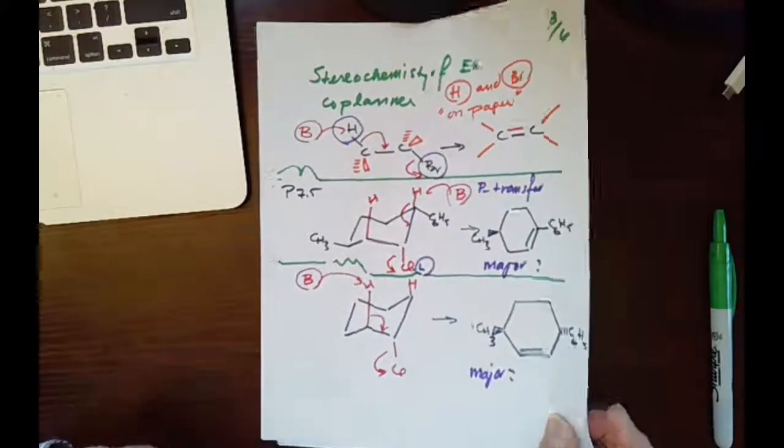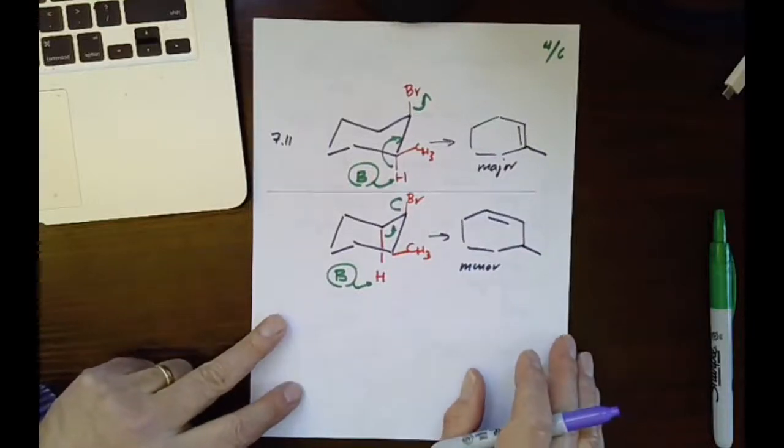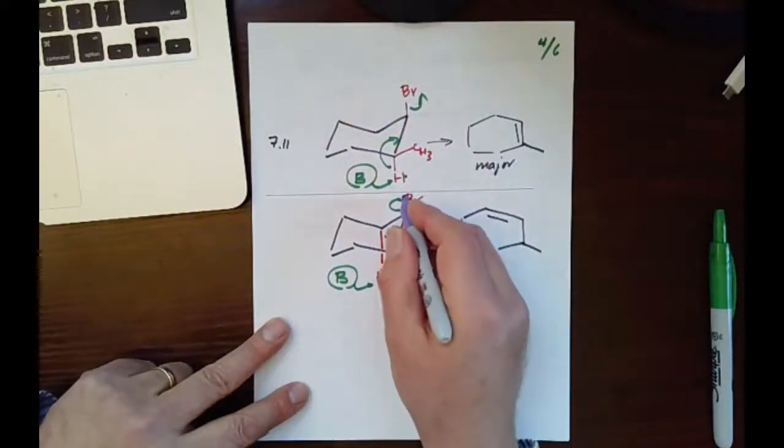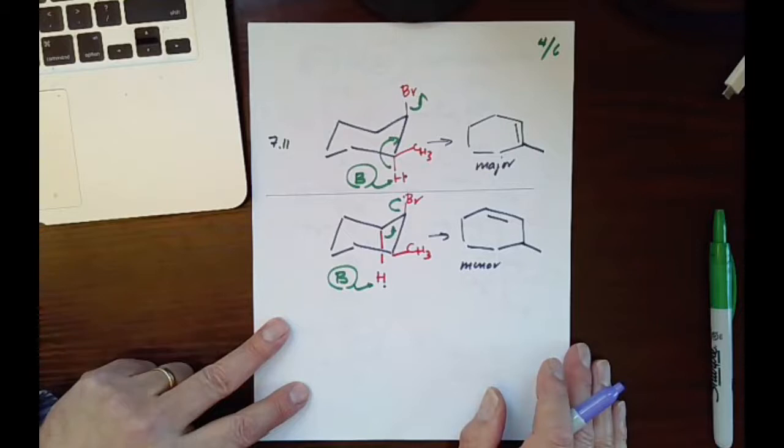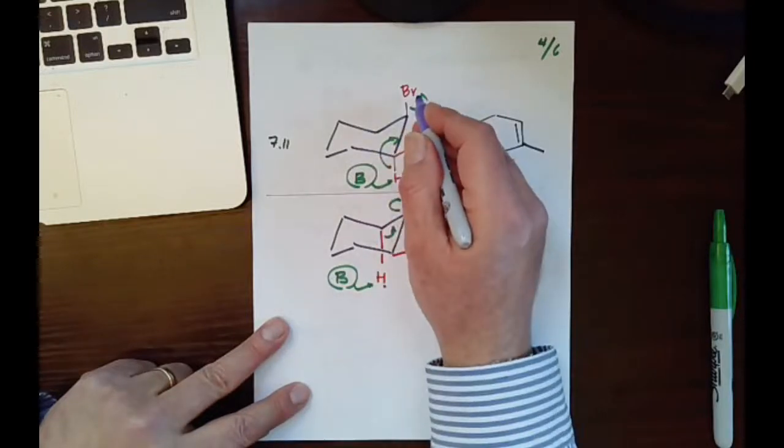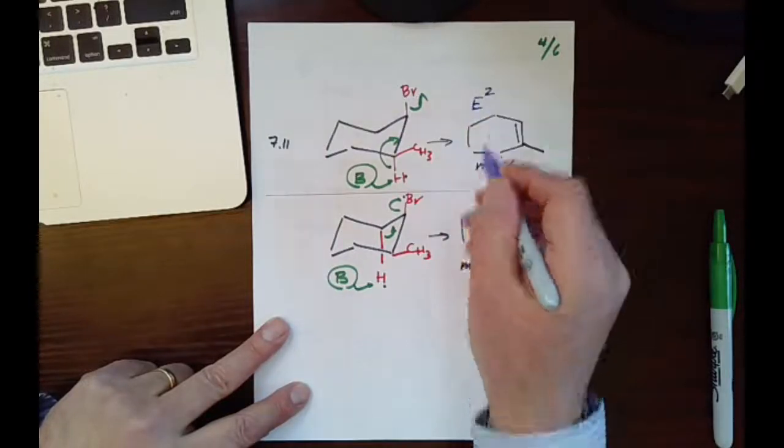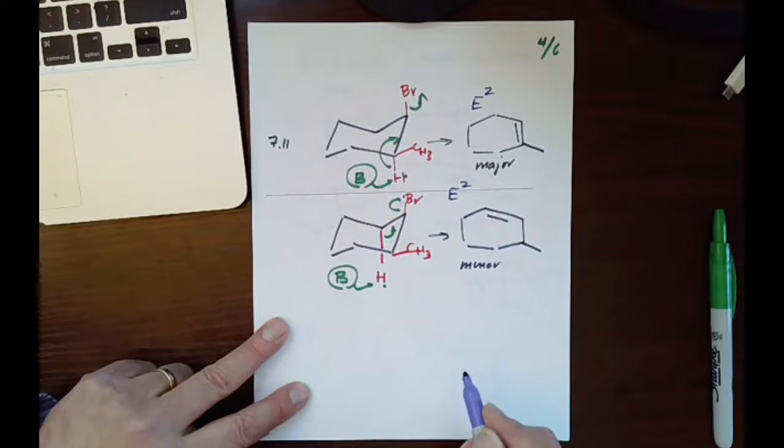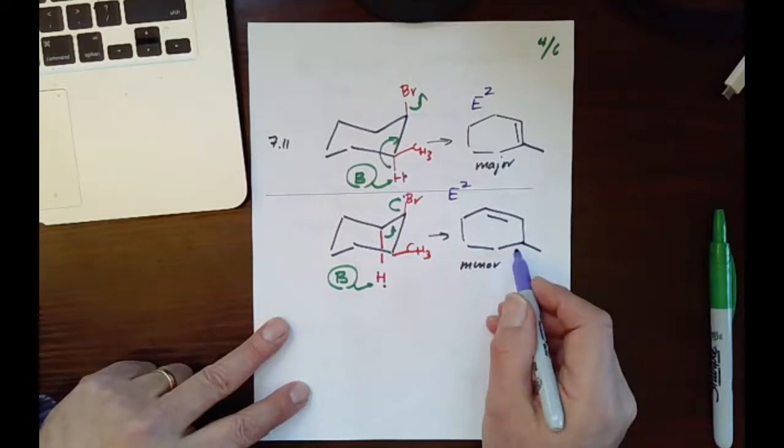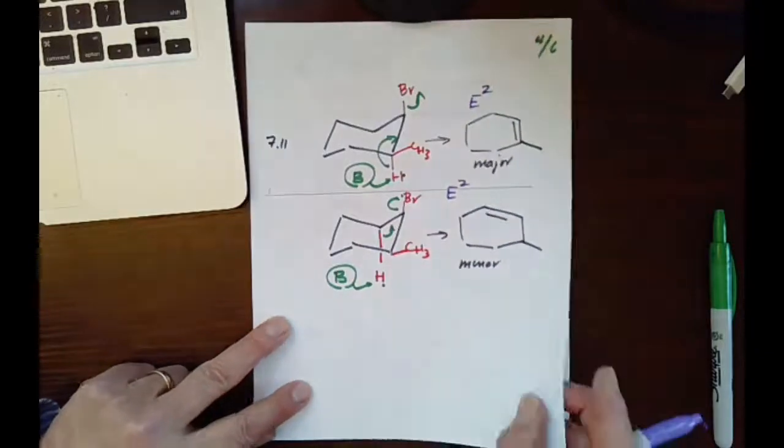Please think about that. Slide number four—same thing we did before. We talked about it again: the H and a Br, H and a Br, both opposite to each other. We remove the H, double bond forms, and Br leaves. Again, these are all E2 mechanisms. Two different products, and I said this one is a major, this is a minor. I'd like to ask you why. Why is this a major, why is this minor?